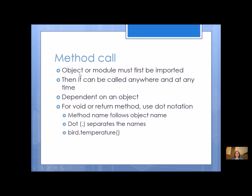Method calls, first you have to have the object or module imported into your code. Then a method can be called anywhere and at any time, but it is dependent on an object. So what that means is when you call that method, you have to say what object you're going to be using it for. For void or return methods, either one, you have to use dot notation. The method name follows the object name. So you're going to have object name dot method name. The dot separates the names. So here's an example. Bird is our object. Temperature is our method. So I have bird dot temperature, and I have to have the parentheses.